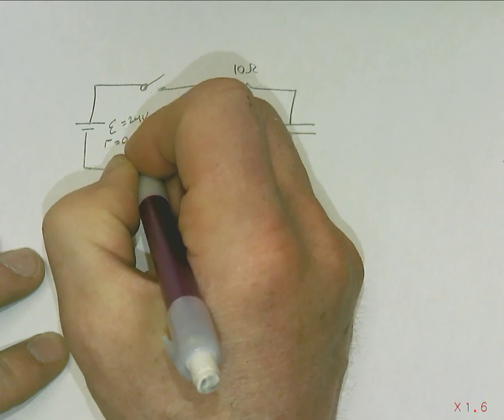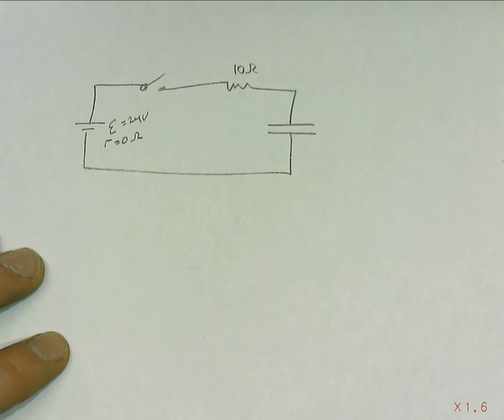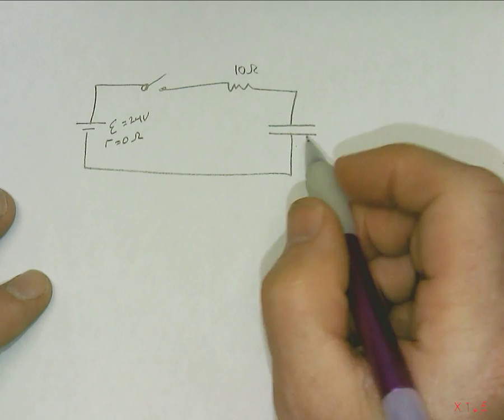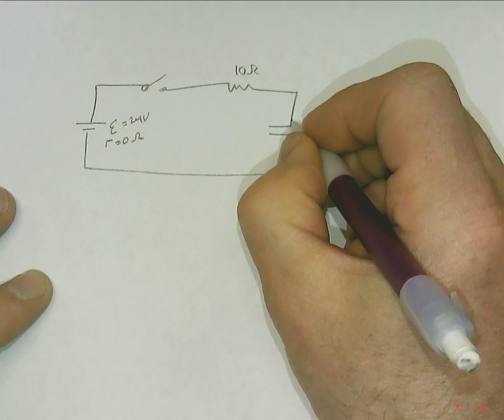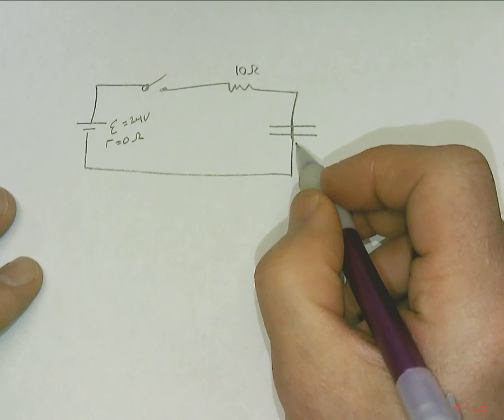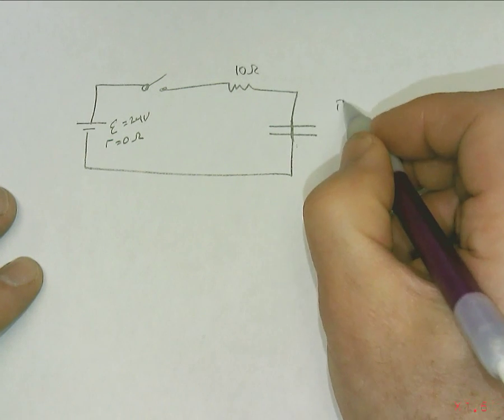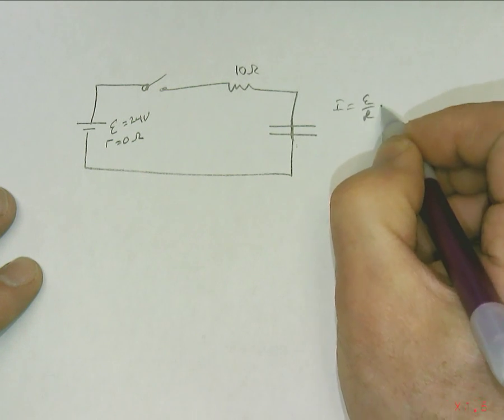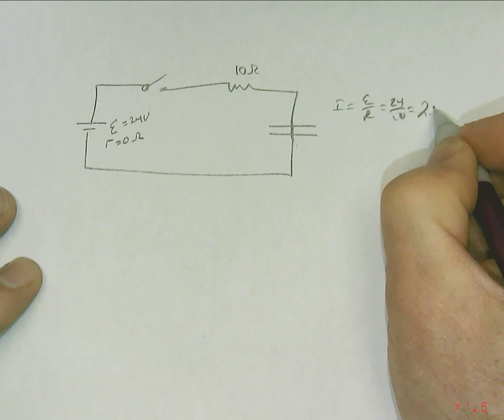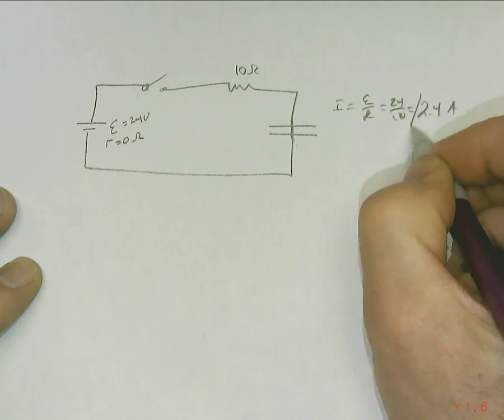The EMF of the source is 24 volts. Little r being equal to 0 ohms just means there's no internal resistance. And so the question is, when you close the switch, what's the initial current flowing in the circuit? Initially, this just looks like a short circuit across there. It's like the capacitor is just a wire. And so I is equal to EMF over R, 24 over 10, 2.4 amps.